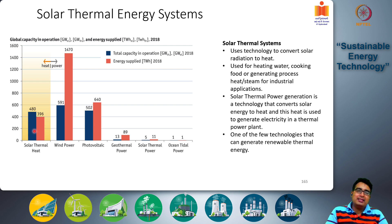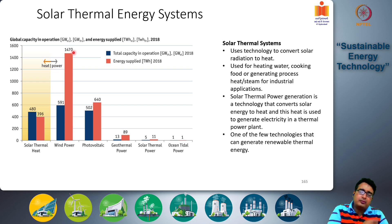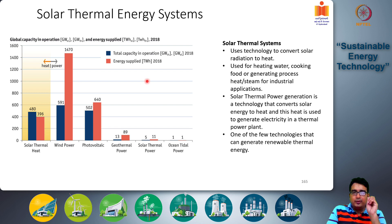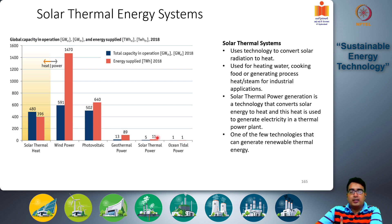Capacity is expressed in terms of power and energy supply in terawatt-hours. For wind power, total capacity is 591 gigawatt-electric and energy supply is 1,470 terawatt-hours — much higher because electricity demand is greater than thermal demand. For photovoltaics, total capacity was 502 gigawatts and total energy supplied was 640 terawatt-hours. Solar thermal power has a very small share: around 1–2 gigawatts capacity and about 11 terawatt-hours of electricity generated.